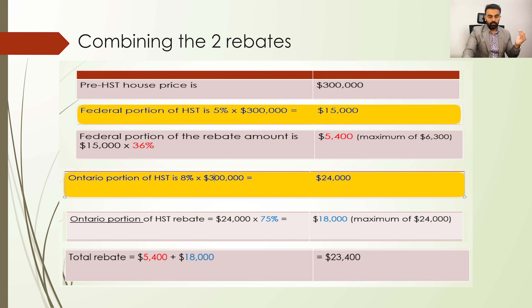Looking at the statement of adjustments: many people wonder how a statement of adjustment looks for an investment property and how the numbers work. In an investment property example, the builder has asked for additional money from the purchaser — at the time of closing they are asking an additional $27,150 from the buyer to compensate for the HST they weren't able to claim back from the CRA. This only happens when you're buying an investment property. In the second example for a principal residence, the house price was approximately $823,000 and the builder applied for the rebate themselves and credited the purchaser — the purchaser did not have to pay this at the time of closing.